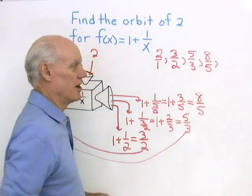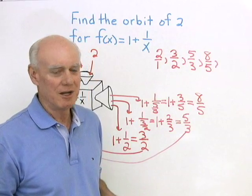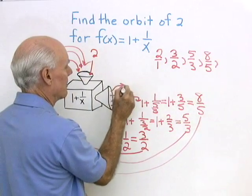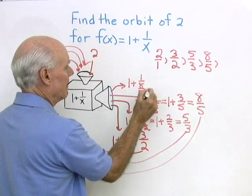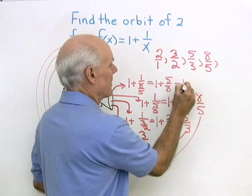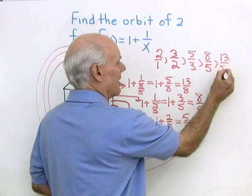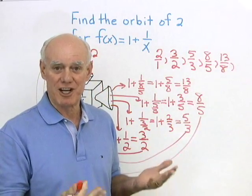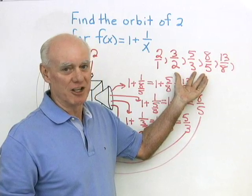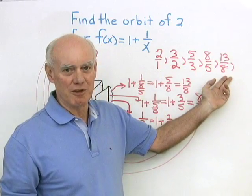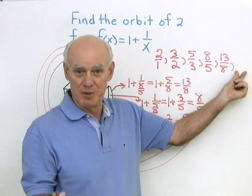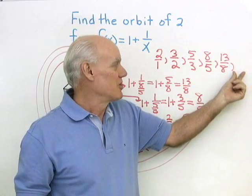I can see a pattern starting to take place — you can use your intuition to guess what the next number will be. Taking 8 fifths and putting it back in gives 1 plus 1 over 8 fifths, which is 1 plus 5 eighths, giving 13 eighths. These are ratios of consecutive members of the Fibonacci sequence — we saw this before with both the golden rectangle and the continued fraction. So I know the next one is going to be 21 over 13, and so on. This one becomes predictable also.